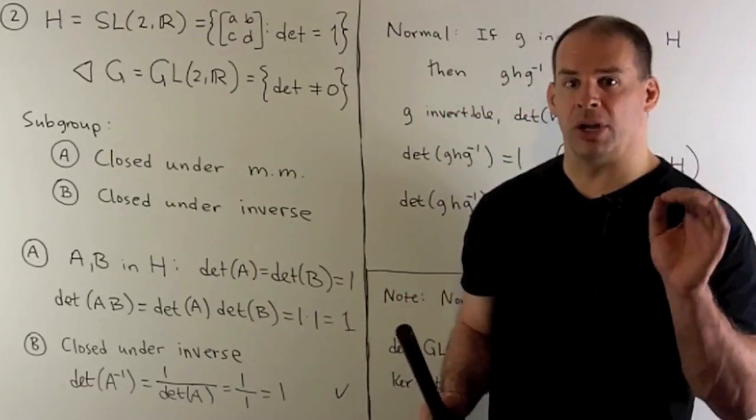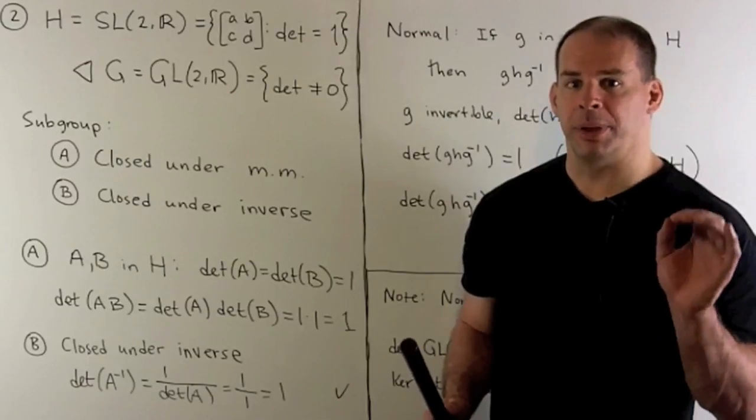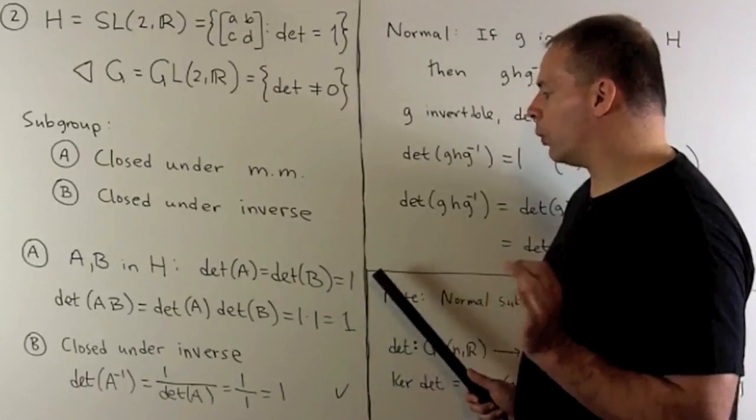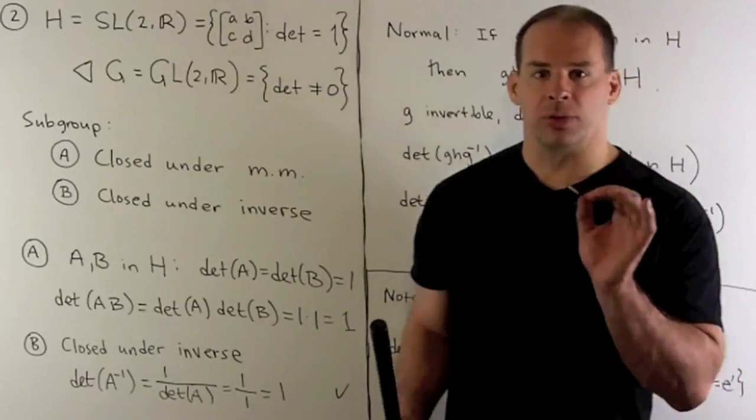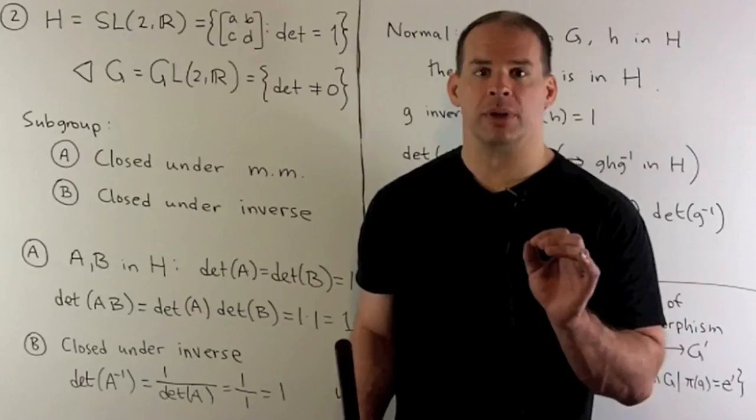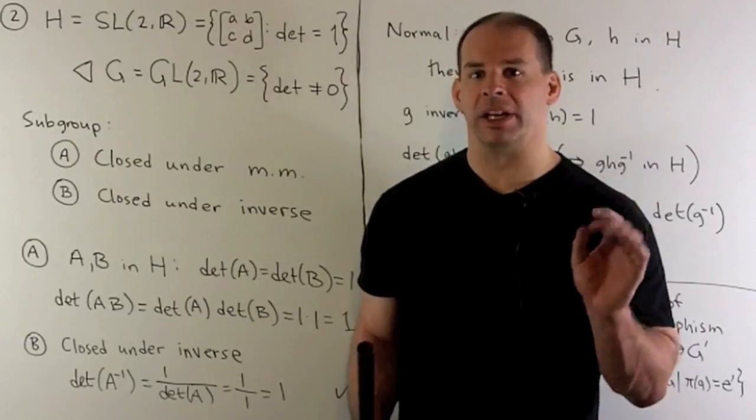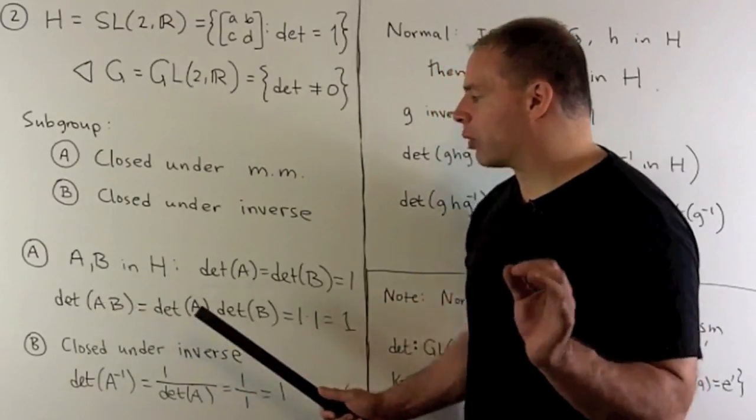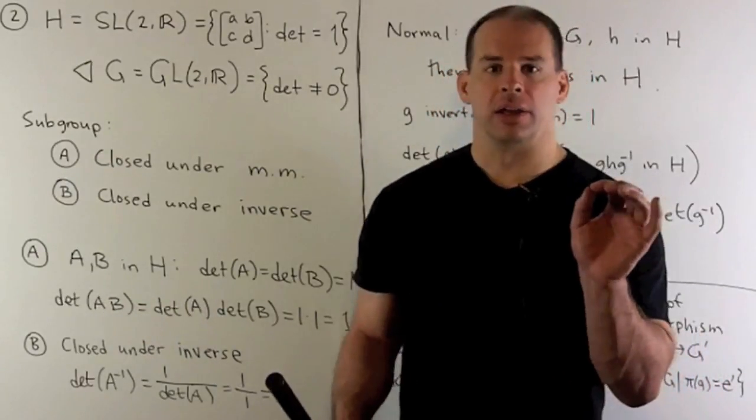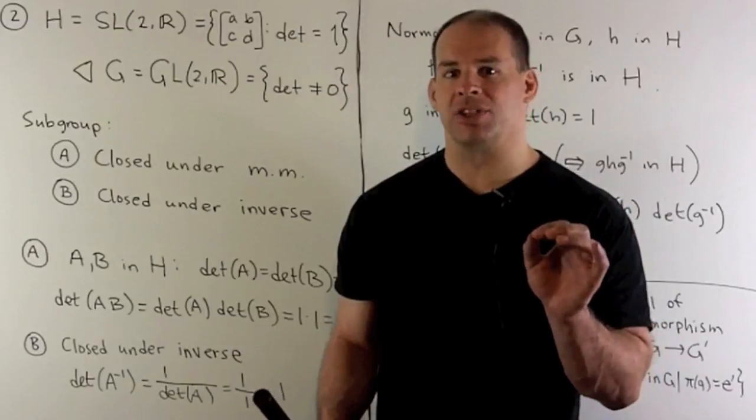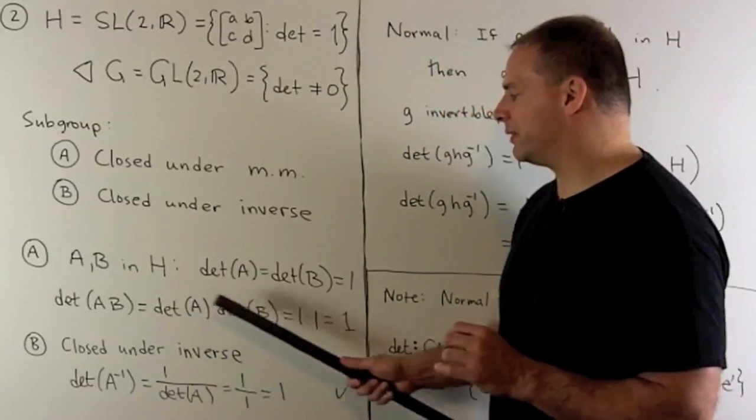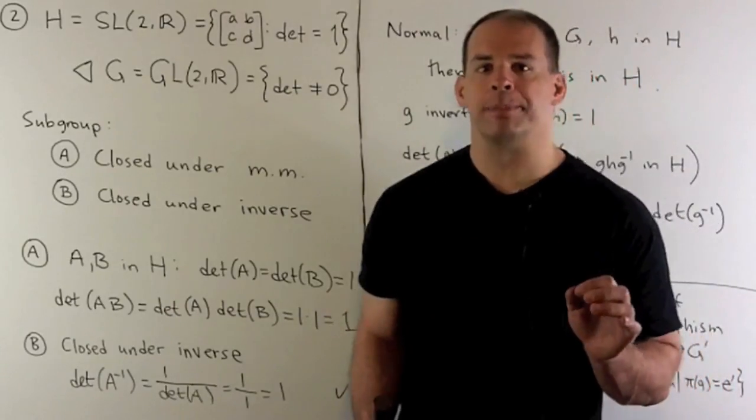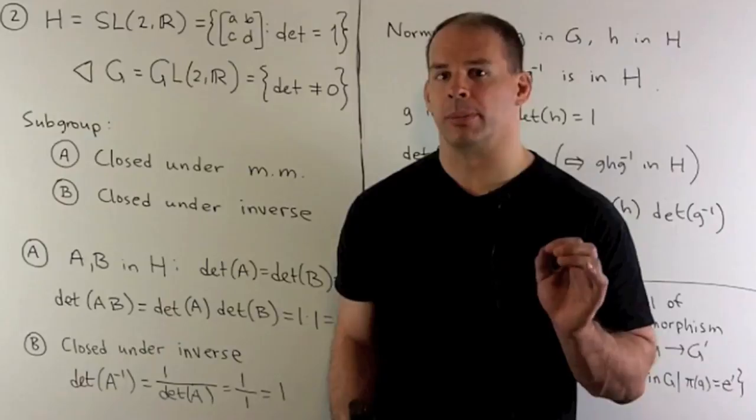To show the closure under matrix multiplication, I'm going to pick A and B in H. So that means both have determinant equal to one. Take the product. We want to see if the product lives in H. So we want to see if the product has determinant equal to one also. So take the determinant. We apply our rule that says we can take determinant of a product is the same as product of the determinants. That each of these is equal to one, so we get one times one is one. So A times B is in H, so we're closed under multiplication.